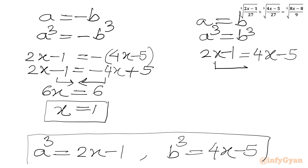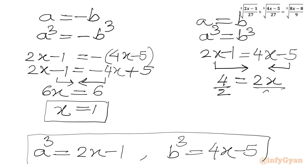For case 2, a = b, so a³ = b³. We write 2x − 1 = 4x − 5. Taking 2x to the RHS and −5 to the LHS: 5 − 1 = 4x − 2x, so 4 = 2x. Dividing both sides by 2, we get the second solution x = 2.